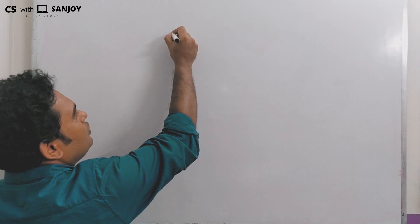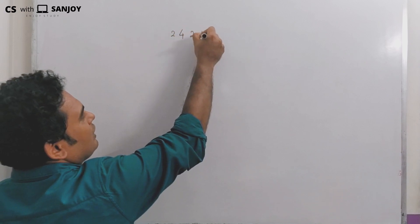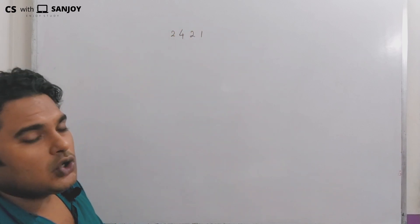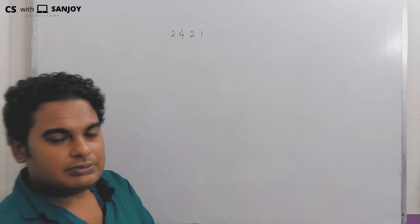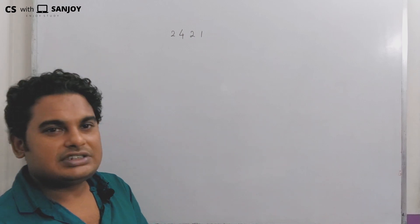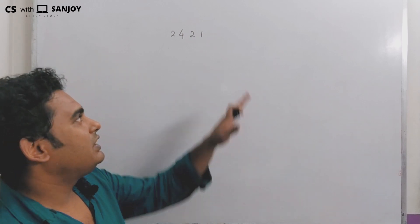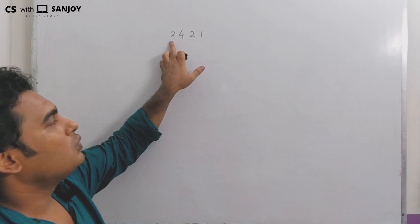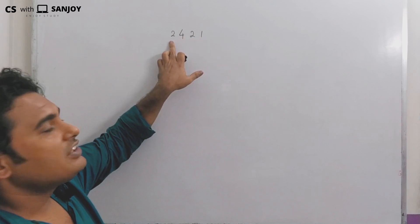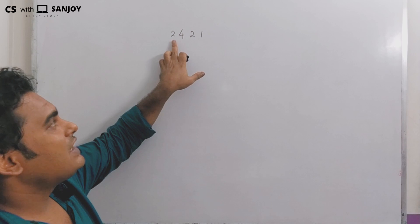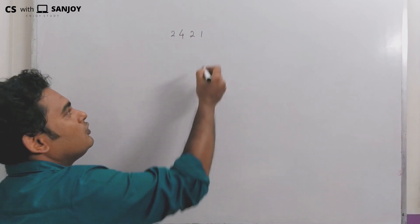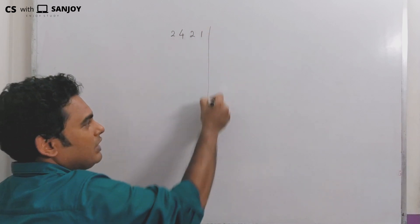Now, 2421 is a weighted number system. That means it is not a non-weighted number system. There is an LSB and an MSB — the most significant bit and the least significant bit. Now I am going to learn the 2421 code.